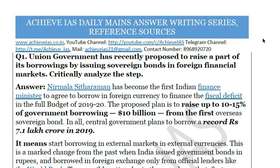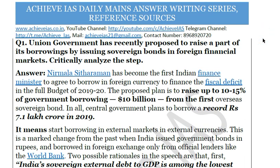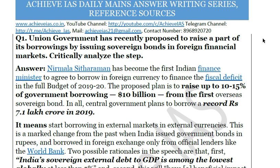Today's question is about borrowings — that is, sovereign bonds — that the recently announced budget proposed. A part of government borrowing will be raised in external currency, i.e. foreign currency, by issuing bonds in global financial markets. The question is: the Union Government has recently proposed to raise a part of its borrowings by issuing sovereign bonds in foreign financial markets. Critically analyze this step.